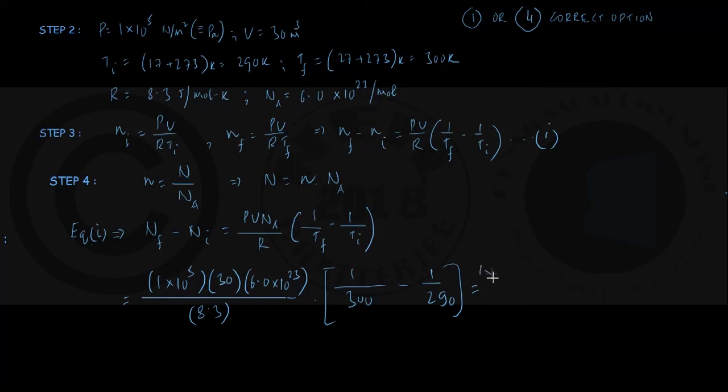We have 1 into 10 to the power 5 into 30 into 6 into 10 to the power 23 divided by 8.3. Inside brackets we have got in denominator 290 into 300, numerator is minus 10. So let me write 10 here and insert a minus sign at the front. We already know that the value will be negative. Now you can see this 30 and 10, 300 cancelling out with this.